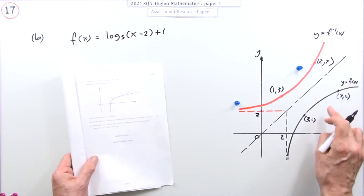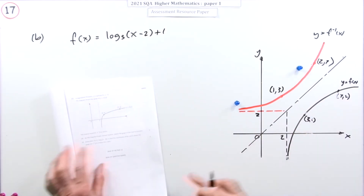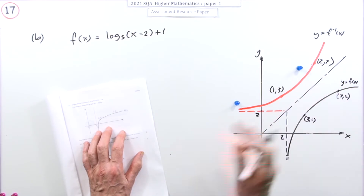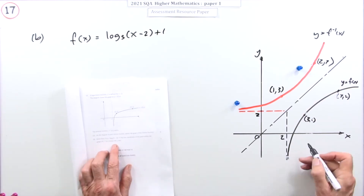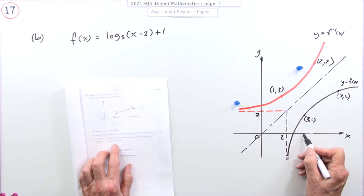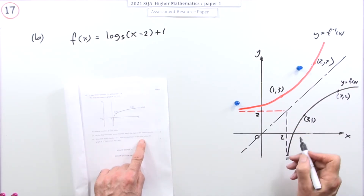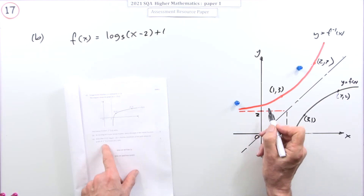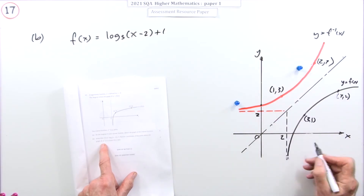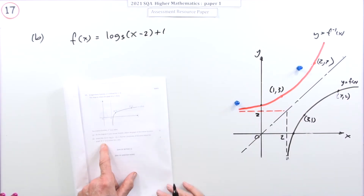Now in part B it says that graph was actually log base five of (x minus two) plus one. You can see it's been shifted - normally it would come down towards the origin, but it's been shifted right by two and up by one. All you have to do is work out where the inverse graph cuts the y-axis. There are two ways: get the inverse function and find it directly, or use the original function to find where it cuts the x-axis, then flip the coordinates - that's easier.